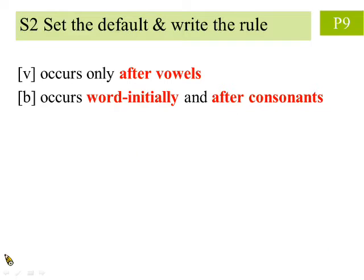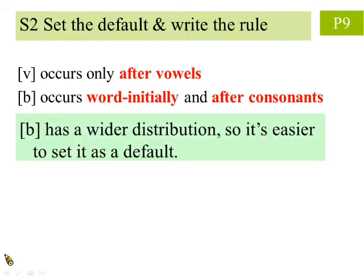In step 2, we find the default form and write the rule. We begin by stating our previous conclusion and observe that b has a wider distribution because it can occur not only after consonants but also word initially. So it's easier to set it as the default and write the rule. If the sound b occurs after a vowel, it becomes the sound v.